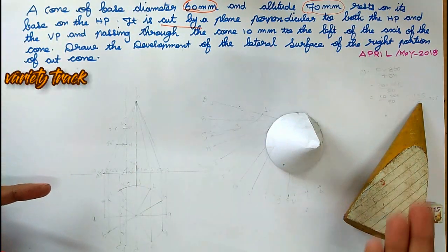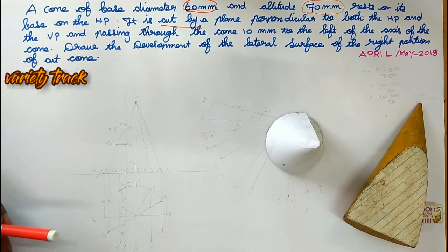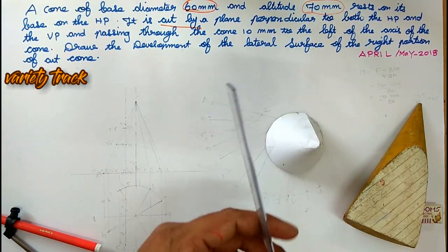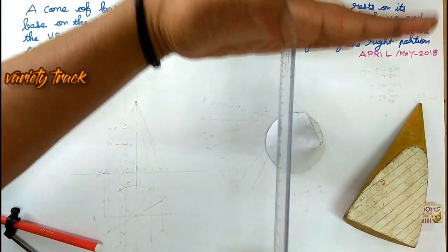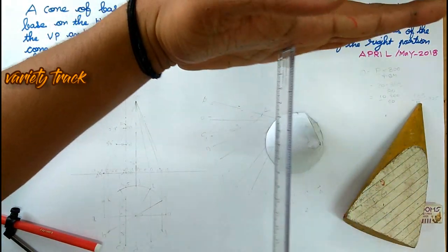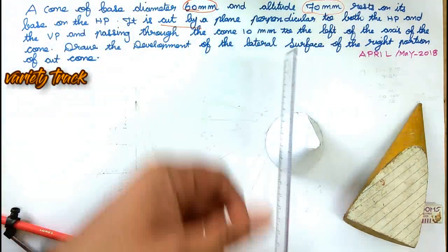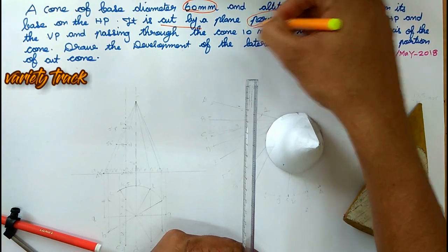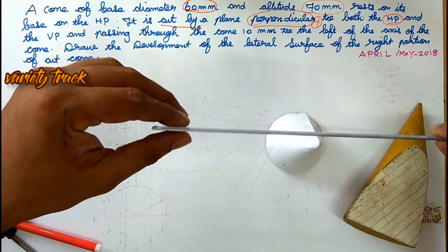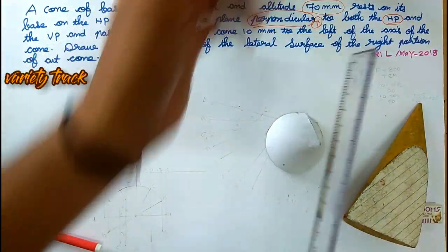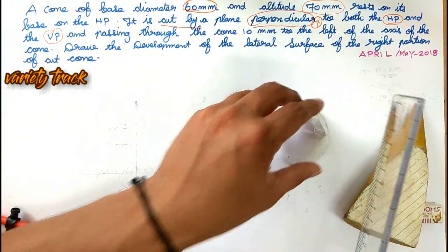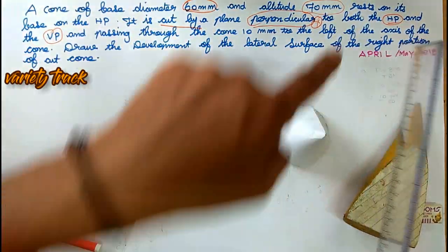It is cut by a plane. This plane cuts the cone. The plane is perpendicular to both VP and HP. So HP is perpendicular to the left, VP is perpendicular to the left — both sides perpendicular. So this is perpendicular to the left side of the axis.